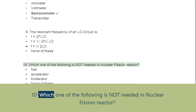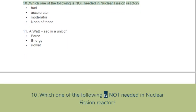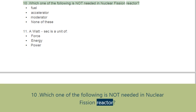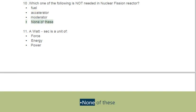Question 10: Which one of the following is not needed in a nuclear fission reactor? Options: A. Fuel, B. Accelerator, C. Moderator, D. None of these.